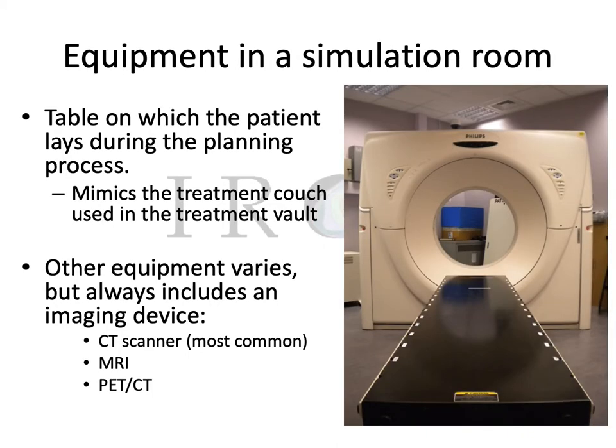In front of you, you can see a classic CT simulation room. You can see the table on which the patient lays during the planning process. The table is flat, unlike a curved surface in radiology, which mimics the treatment couch used in the treatment vault. Again, you can have different equipment, but it always includes an imaging device.